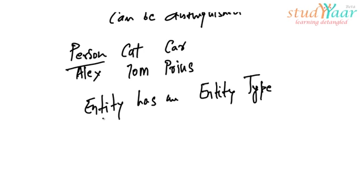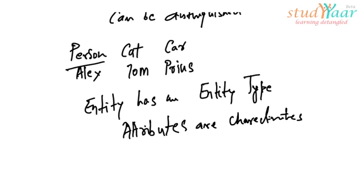The other thing that we have to understand here is, an entity has different characteristics, right? And these characteristics are called the attributes of the entity. Attributes are characteristics.